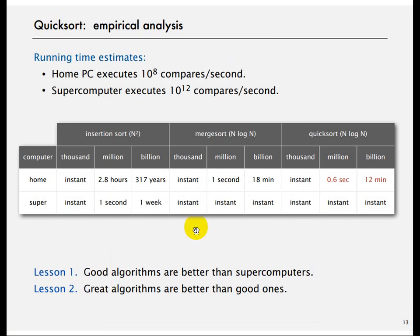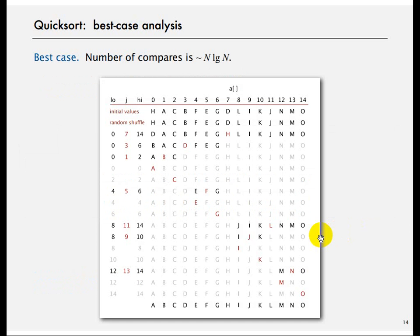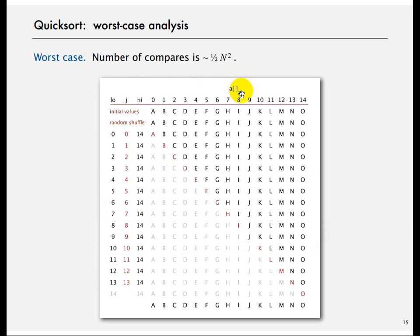Here is some empirical analysis. For a billion elements, if merge sort took 18 minutes, Quicksort takes about 12 minutes. At the per-second level, Quicksort takes about 0.5 seconds — approximately 40 percent faster. The best case number of compares is N log N.